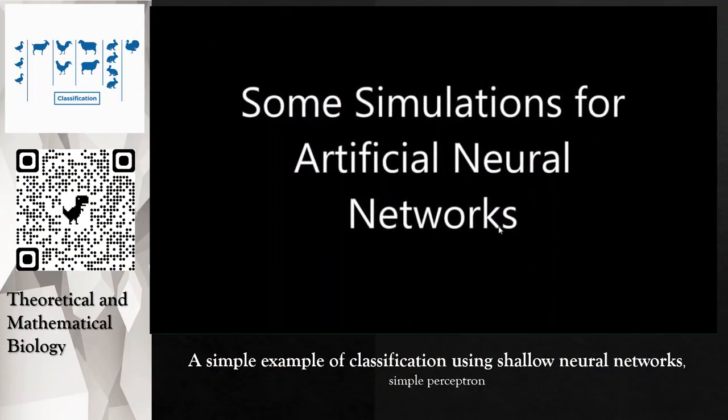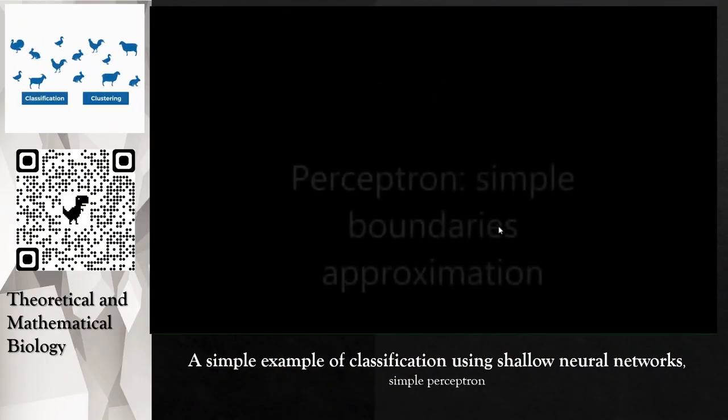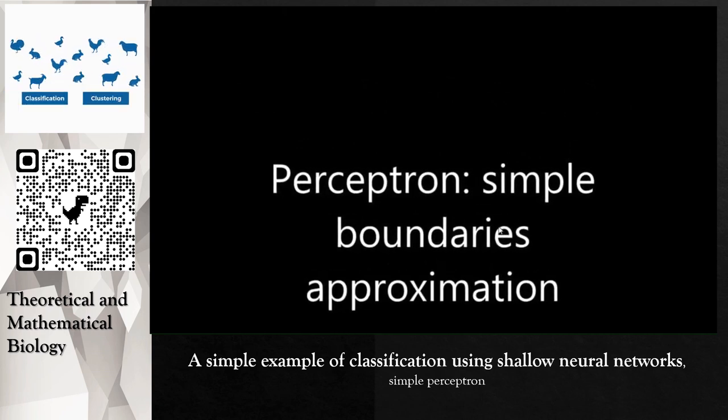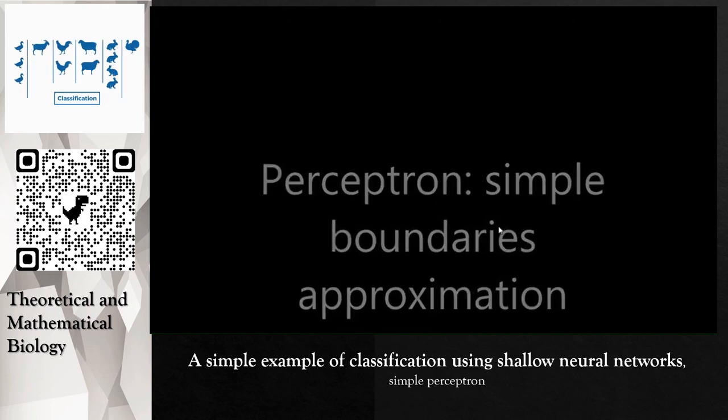A simple example of an artificial network is the perceptron, which finds a linear boundary. It's a very classical example.